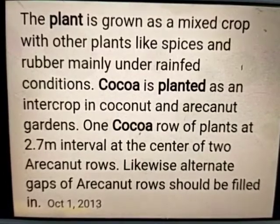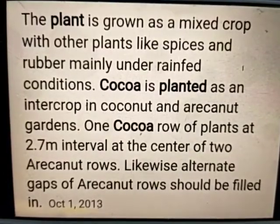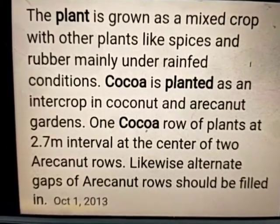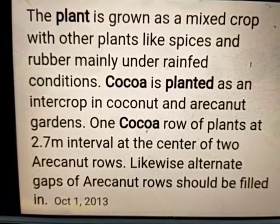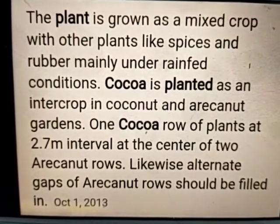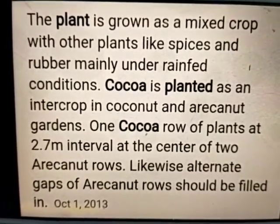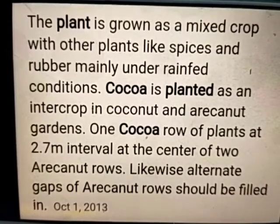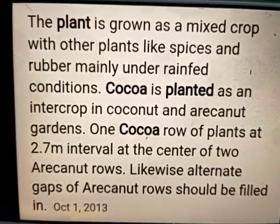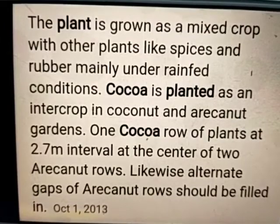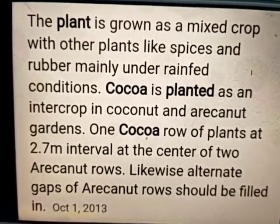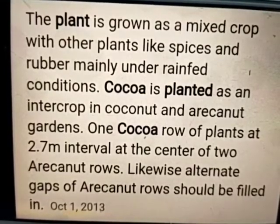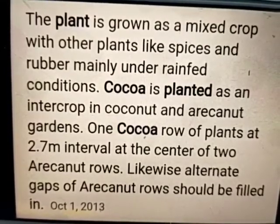Methods of planting cocoa trees: the plant is grown as a mixed crop with other plants like spices and rubber, mainly under rain-fed conditions. Cocoa is planted as an intercrop in coconut and arecanut gardens. One row of cocoa plants is placed at 2.7 meter intervals at the center of two arecanut rows. Likewise, alternate gaps of arecanut rows should be filled in.